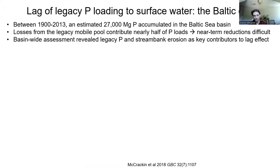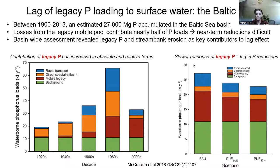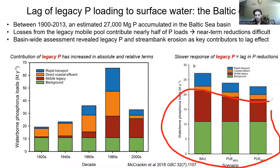I want to end with implications from the Baltic Sea basin, which had a similar issue. The takeaway is that legacy phosphorus and stream bank erosion are such that even if you increase fertilizer use efficiency up to 90% — which is close to what Illinois already achieves — you may still not see water quality improvements on short timescales.